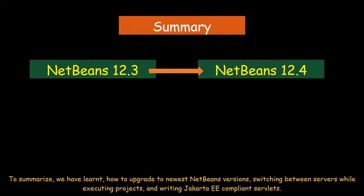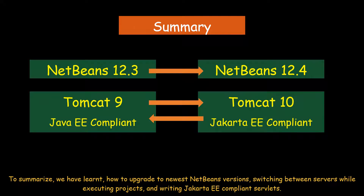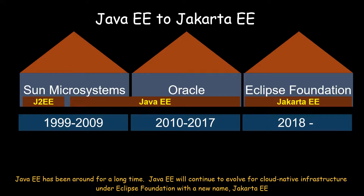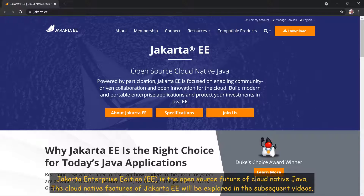To summarize, we have learnt how to upgrade to the newest NetBeans versions, switching between servers while executing projects, and writing Jakarta EE compliant servlets. Java EE will continue to evolve for cloud-native infrastructure under the Eclipse Foundation with a new name, Jakarta EE. Jakarta Enterprise Edition is the open-source future of cloud-native Java, and its cloud-native features will be explored in the subsequent videos.